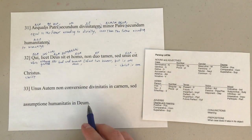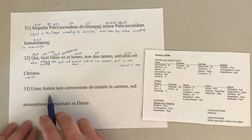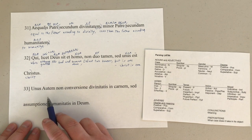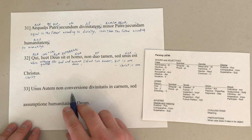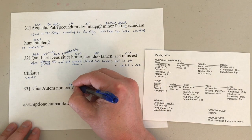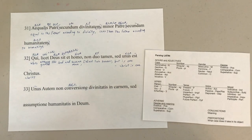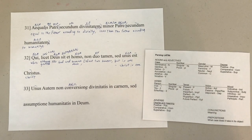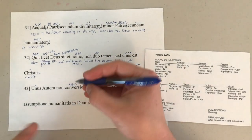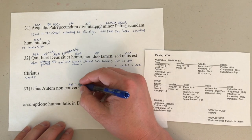Moving on to verse 33, which, according to the editors, is a single contained thought. So, unus, autem — autem again could be 'however,' 'yet,' 'now,' or 'but,' so we need a little bit more context. No parsing there. Negative. Conversione — we've got an -e there for an ablative, and it is singular. And this is an unusual one because, from what I remember, third declension -o nouns are neuter, but this one is actually feminine. Conversione, conversiones — yeah, it's weird.